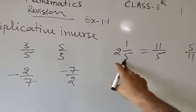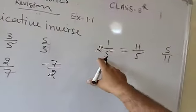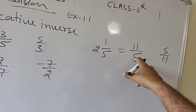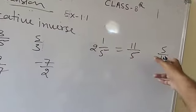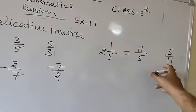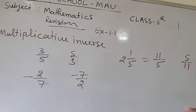So if you are given this kind of number, first convert it into improper fraction form, and after that you can write the reciprocal — that is the multiplicative inverse of the number.